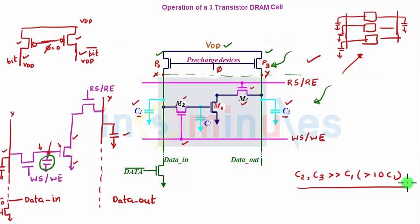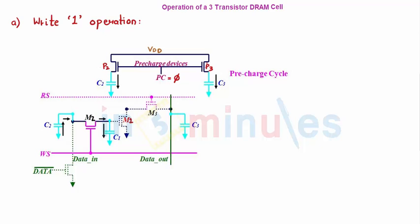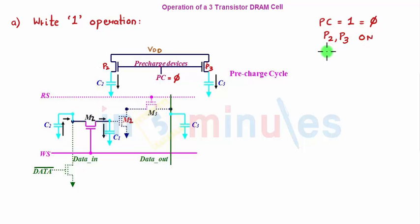Let's get started with the operations. First, a write 1 operation. Before every cycle — whether write 1, read 1, write 0, or read 0 — I make PC equal to 1. PC is the pre-charged signal, also called phi. When that goes to 1, P2 and P3, which are NMOS transistors, turn on and charge C2 and C3 to approximately VDD. Just keep this in mind as the common first step.